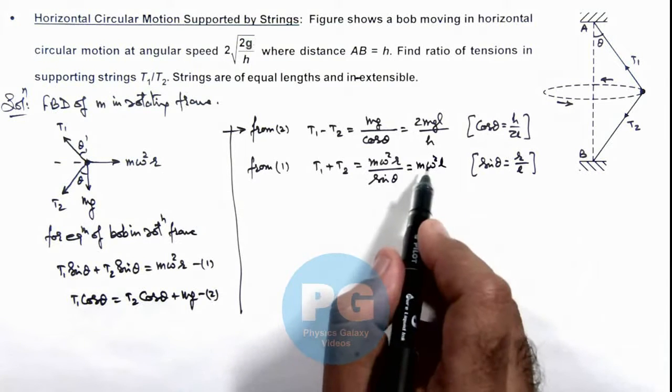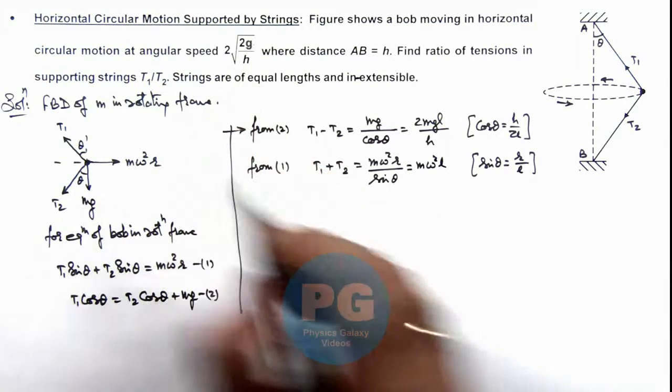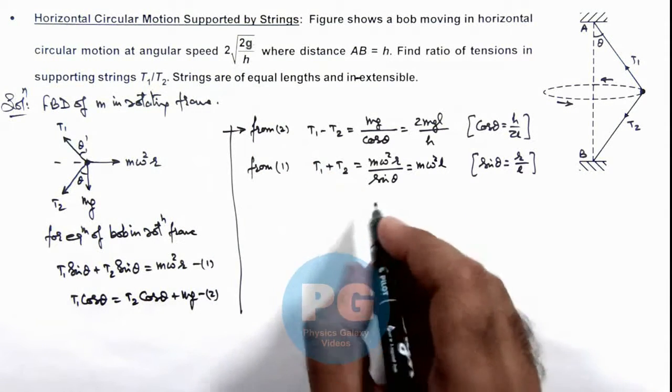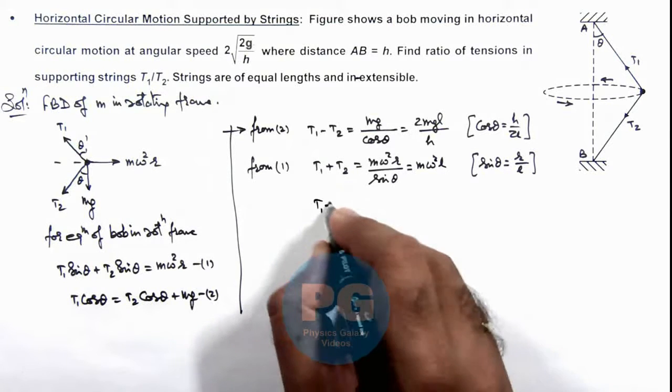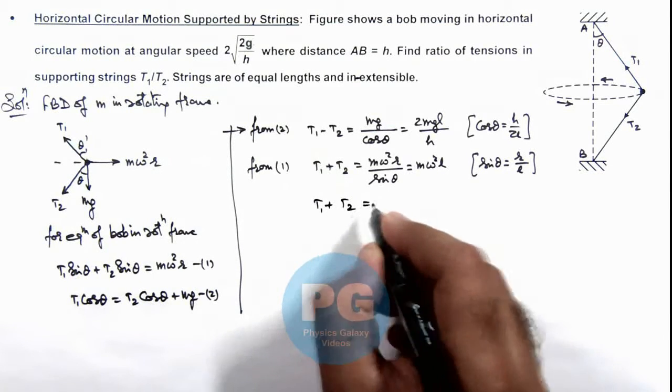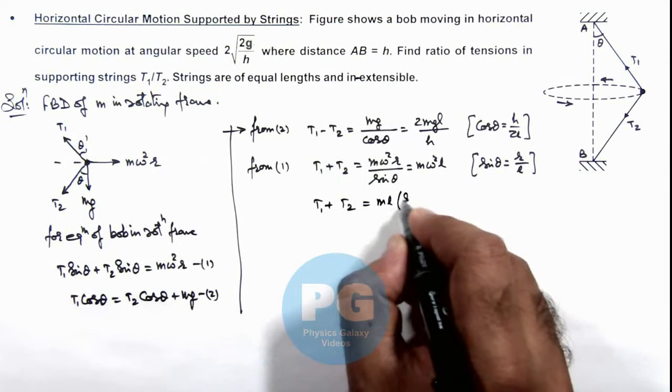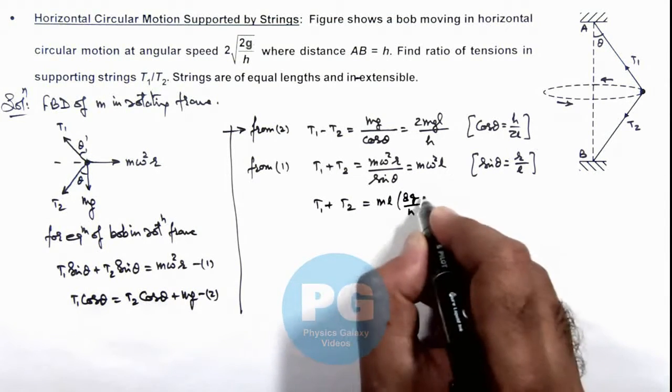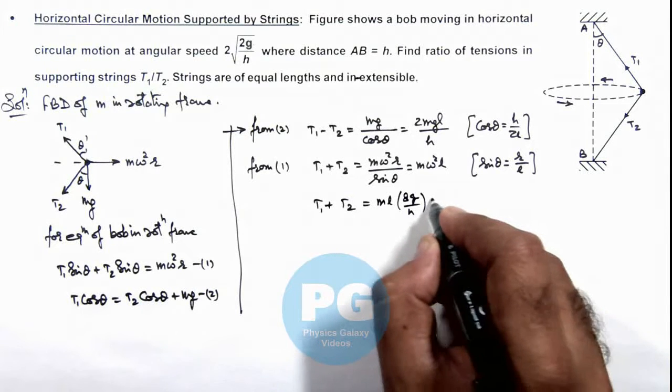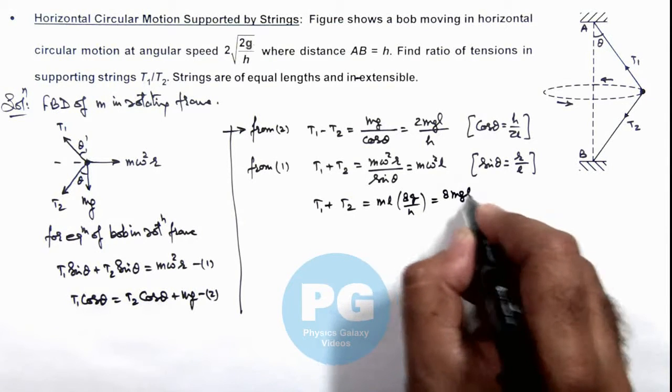We can further substitute the value of ω, which is given here as 2√(2g/h). So here the value of T₁ + T₂ becomes ml × ω², which we can write as 8g/h. So this is 8mgl/h.